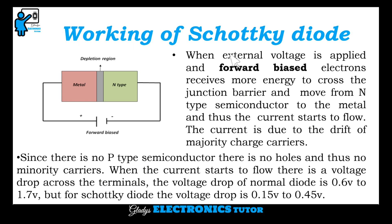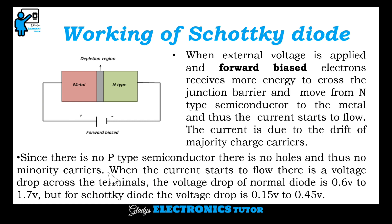Next, we will see about the working of the Schottky Diode. When external voltage is applied and forward biased, electrons receive more energy to cross the junction barrier and move from the N-type semiconductor to the metal, and thus the current starts to flow. The current is due to the drift of majority charge carriers. Since there is no P-type semiconductor, there are no holes and thus no minority carriers.